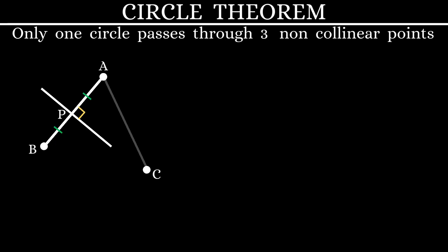Next, let's come to line AC. We'll construct a perpendicular bisector for this line as well. Let the point of intersection be Q. So, AQ is equal to QC.